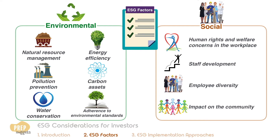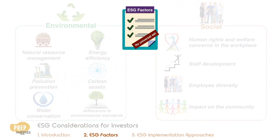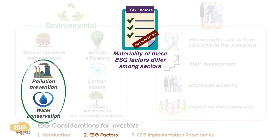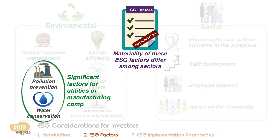These factors can affect the firm's staff turnover, employee morale, and reputation, which in turn have an impact on the firm's profitability and competitiveness. Unfortunately, there's no universal set of factors that can be applied to all companies, as the materiality of ESG factors often differs among sectors. For example, environmental factors such as pollution prevention and water usage will likely be significant for utilities or mining companies.